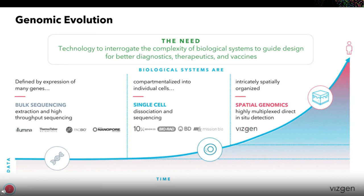However, sequencing-based approaches have a fundamental limitation because they don't usually provide the spatial context of what you're looking at. To do the sequencing, cells either have to be destroyed or dissociated, and thus we lose the very rich spatial information for the 3D tissue structure. As many biological problems do require multiplexed, spatially resolved single cell measurements, we see a huge demand for technologies that can satisfy this criteria.